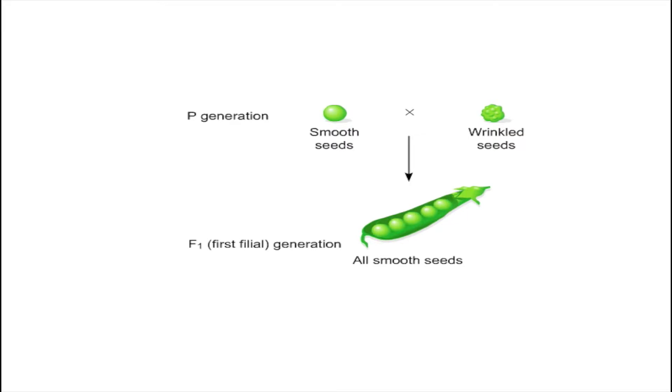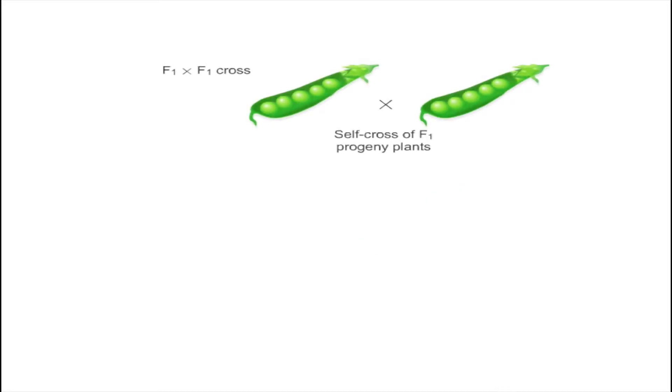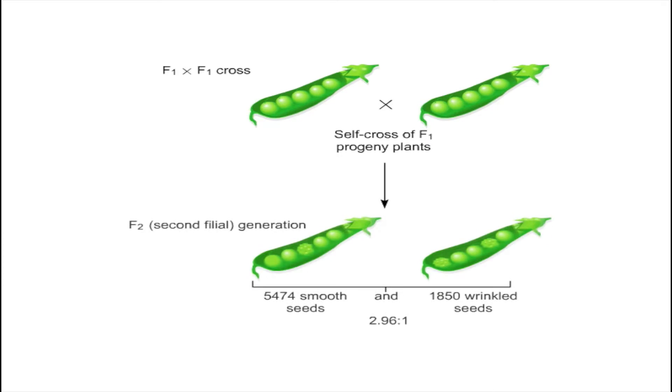Notice that the offspring, or first filial generation, exhibit only one parental trait, the smooth seed. When the F1 generation was self-crossed, the resulting F2, or second filial generation, produced an interesting result. The offspring showed a ratio of three smooth seeds to one wrinkled seed. Notice that the wrinkled seed trait returned and is undiluted.